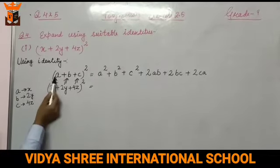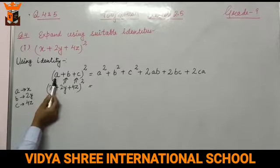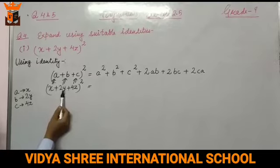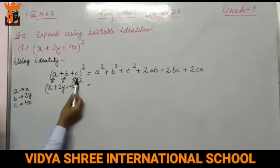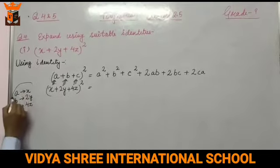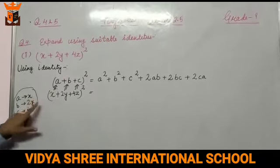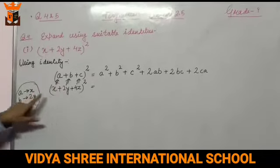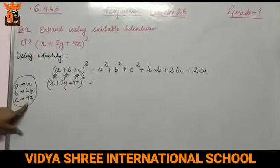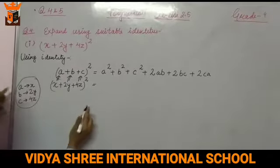The value of a is clearly visible — we replace a with x. And what do we replace b with? 2y. And what do we replace c with? 4z. So we write on the side: A is X, B is 2Y, C is 4Z. We just have to replace these values into the identity.